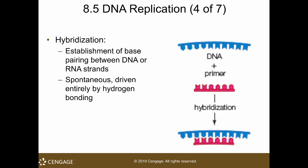This is how you start the replication of a DNA. You unwind the helix, separate the two strands, and add a primer on your strand. For cellular replication, the primer is RNA. Polymerases can only add to an already-present growing strand — they cannot add a nucleotide from nothing. This is called hybridization: the establishment of base pairing between DNA and RNA, a spontaneous process driven entirely by hydrogen bonding.